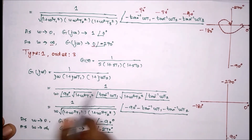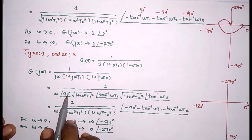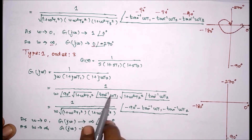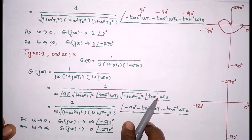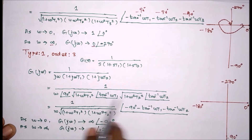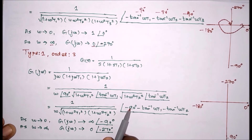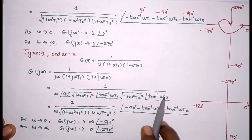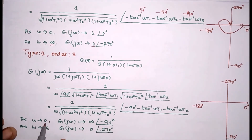The magnitudes are 1 by omega multiplied by the respective terms. The angle equals the sum of the individual angles. Since these terms are all multiplication factors in the denominator, when we take all angles to the numerator they become negative. So in multiplication, we add the angles, giving minus 90 degrees minus tan inverse of omega T1 minus tan inverse of omega T2.